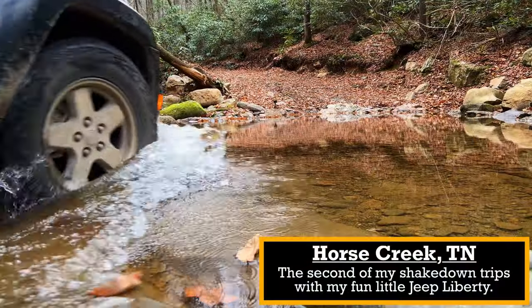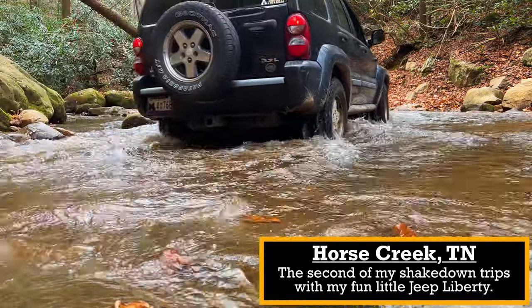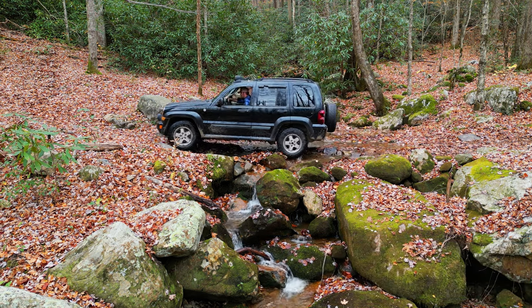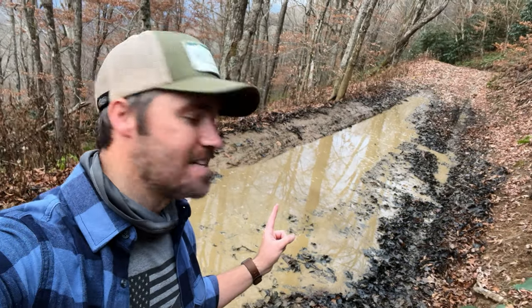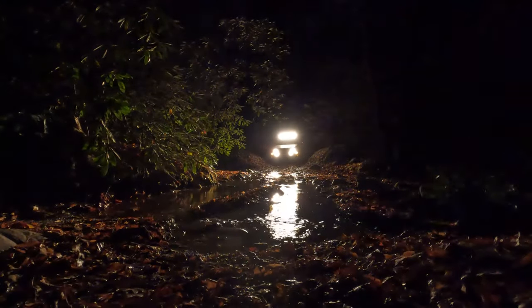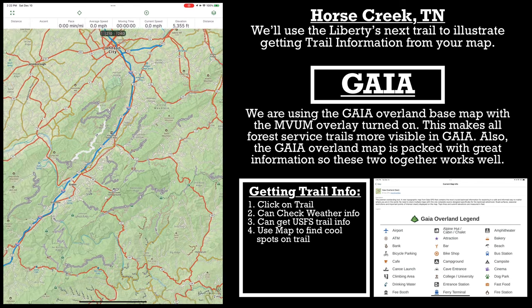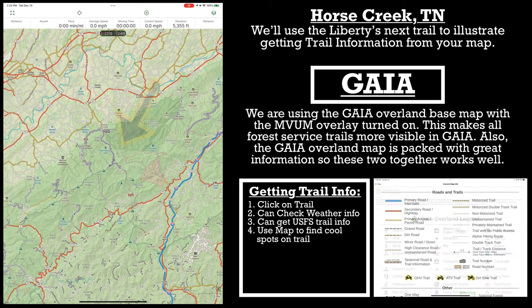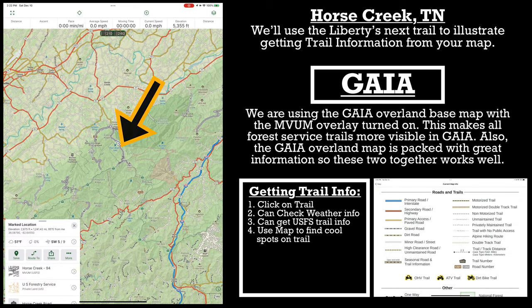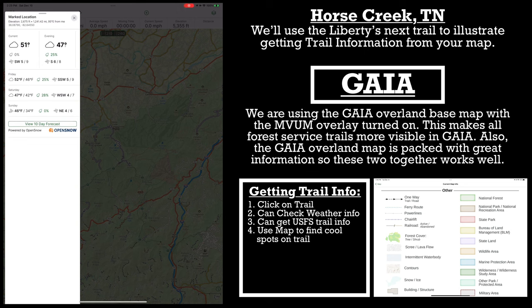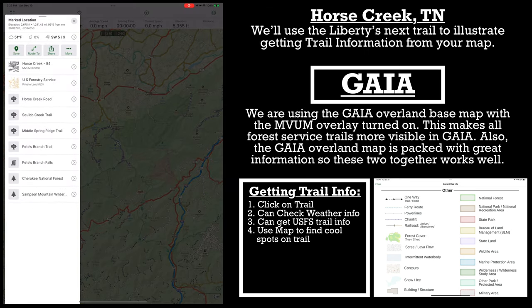Let's talk about getting trail information from your maps. Both Gaia GPS and OnX give you trail information from their map layers. OnX probably has it in an easier form to digest because they highlight the entire map — that might be a win for OnX. However, you can get much the same information from Gaia GPS by clicking on a trailhead, which gives you US Forest Service or other gathered information.